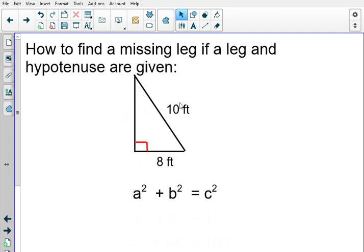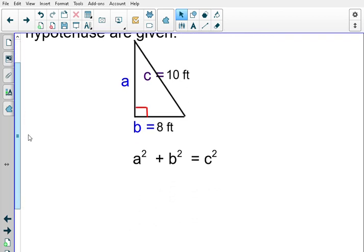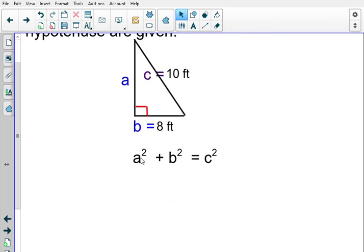C in this case, which is the hypotenuse, is equal to 10 feet. B is equal to 8 feet, and it's A that we're missing. So, let's go ahead and plug our information into the Pythagorean theorem, which is A squared plus B squared equals C squared. A is our unknown, so we're going to leave it as A squared.